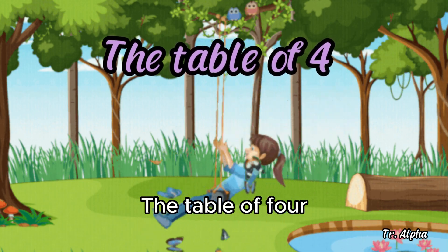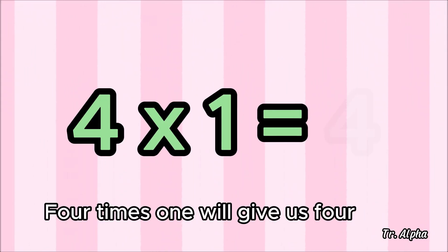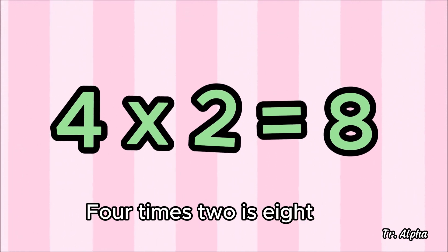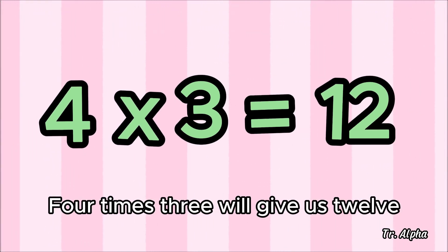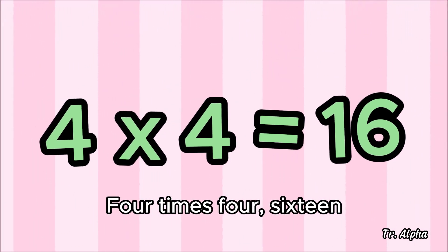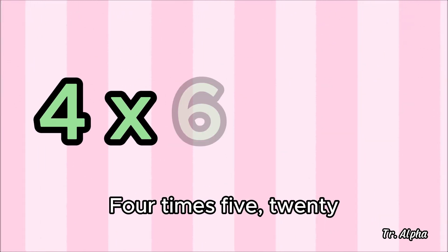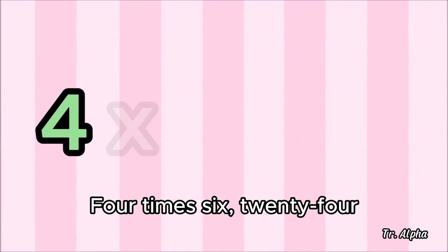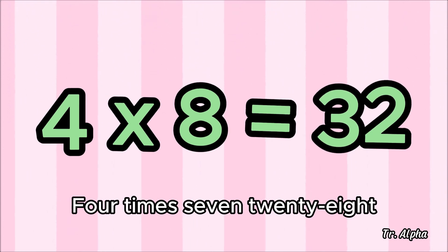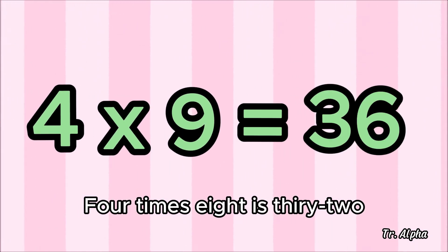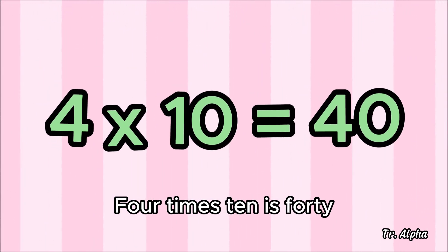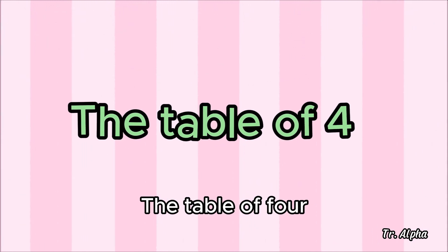The table of 4. 4 times 1 will give us 4. 4 times 2 is 8. 4 times 3 will give us 12. 4 times 4 is 16. 4 times 5 is 20. 4 times 6 is 24. 4 times 7 is 28. 4 times 8 is 32. 4 times 9 is 36. 4 times 10 is 40. The table of 4.